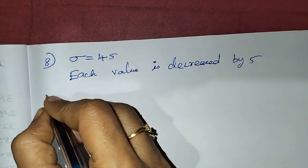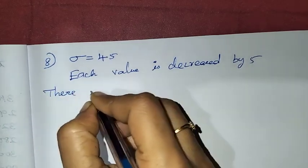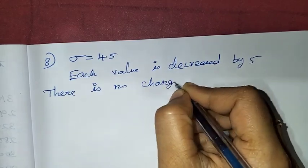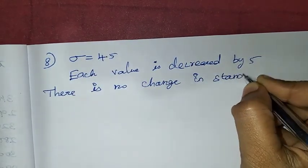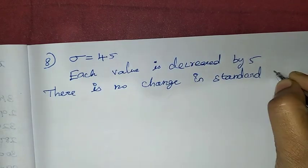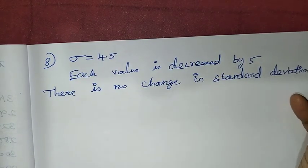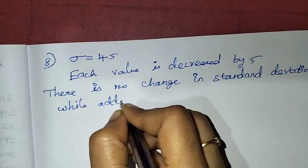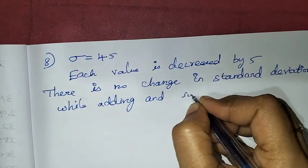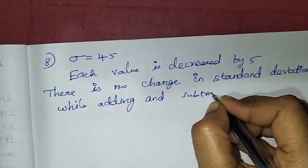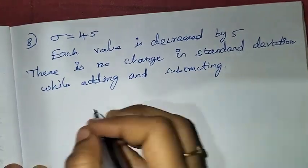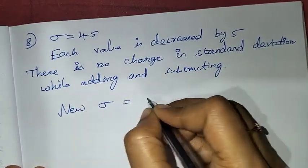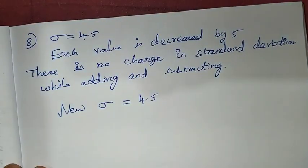So, there is no change in standard deviation. There is no change in standard deviation while adding and subtracting. That is, decreasing or decreased means subtracting. So when adding and subtracting, new standard deviation is also 4.5. Therefore, new standard deviation is also 4.5.